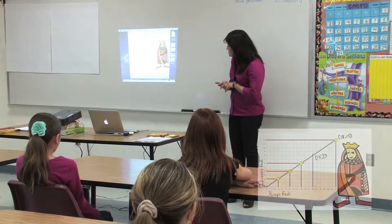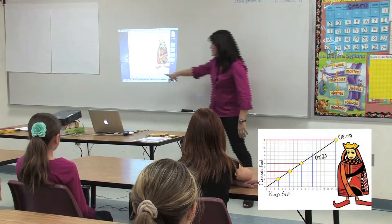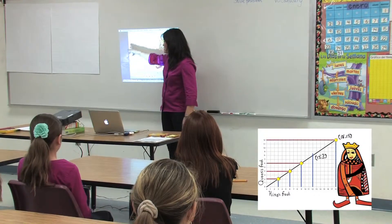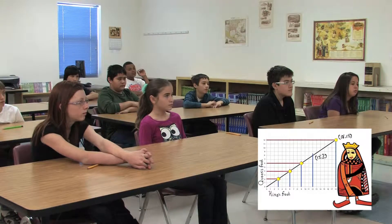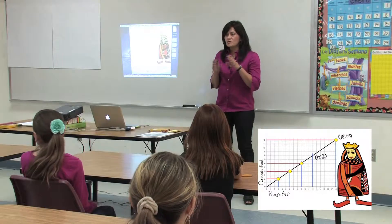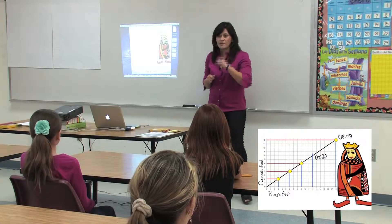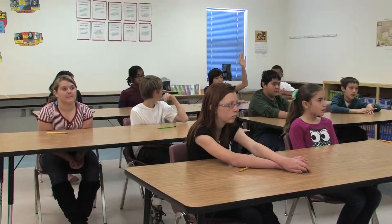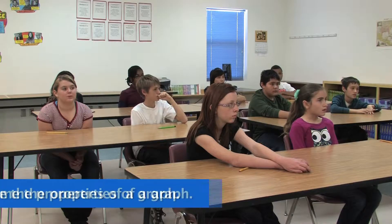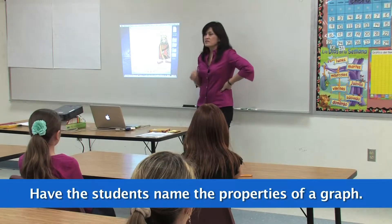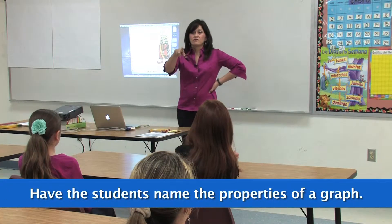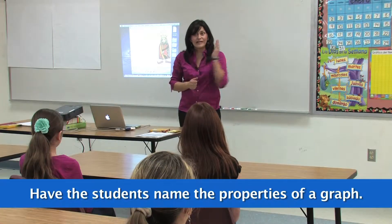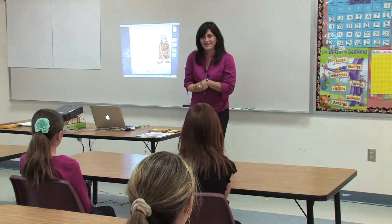So my question for you is: what if they would have put the queen's feet here and the king's feet here — would the graph be the same? What's the most important thing to do even before you start plotting points? Draw the x and y axis. And then what else? Label the axes. You've got to label your x and y axis.